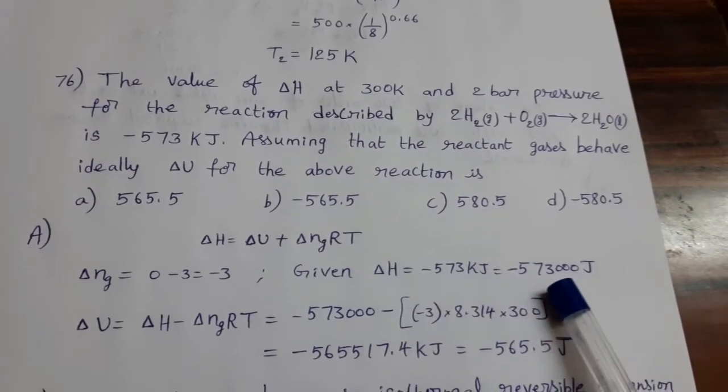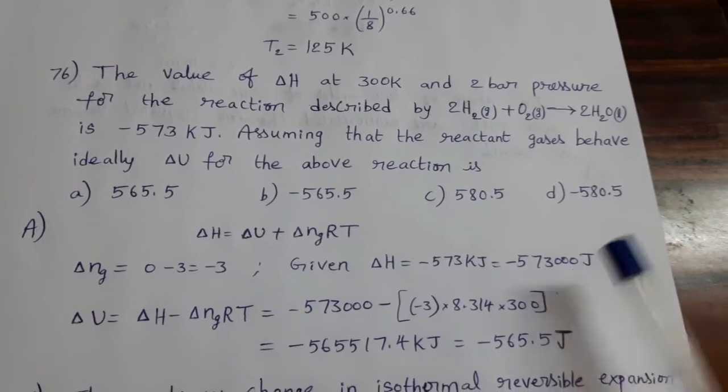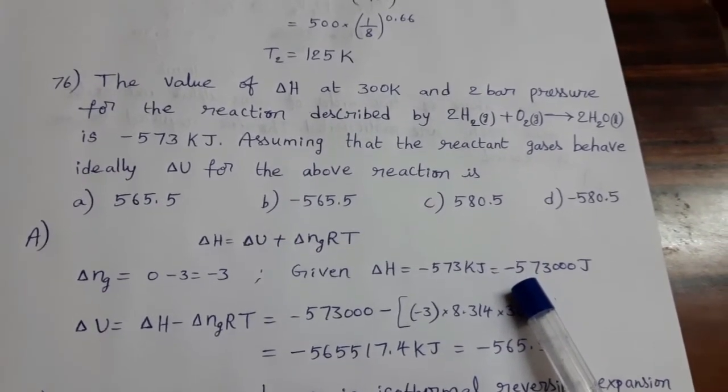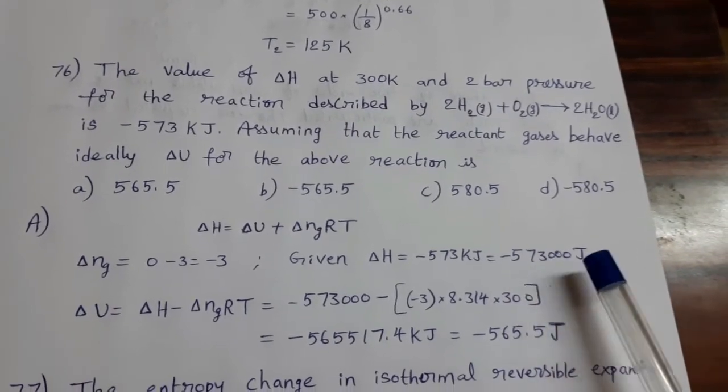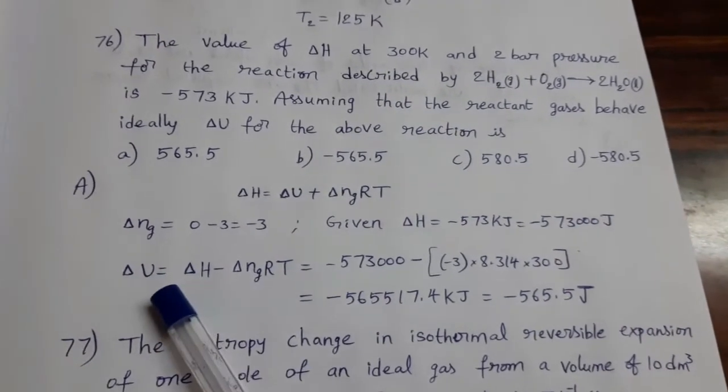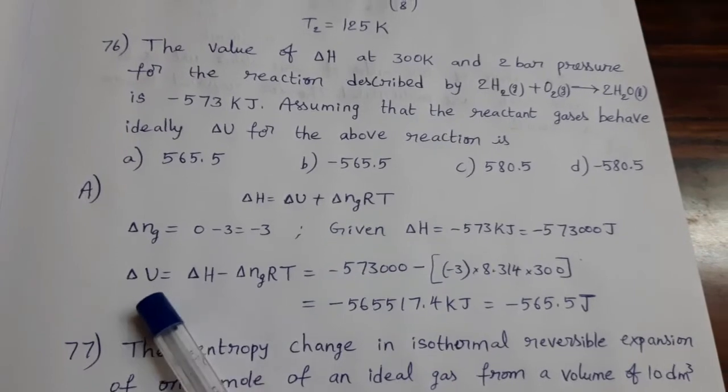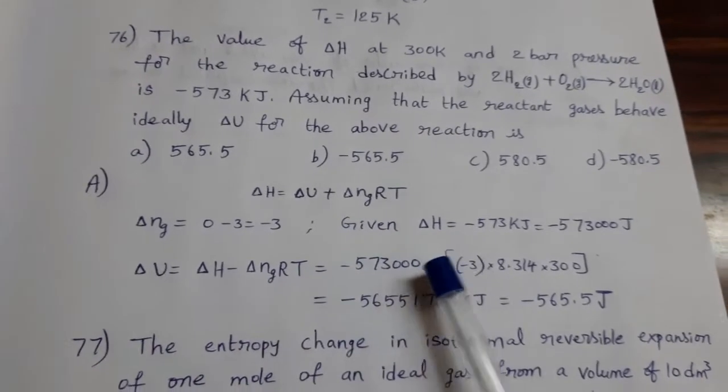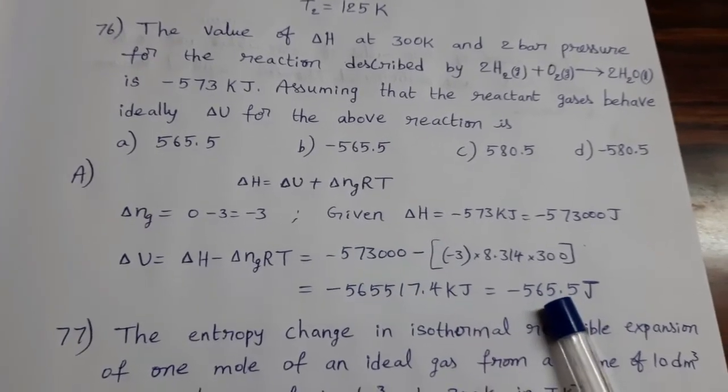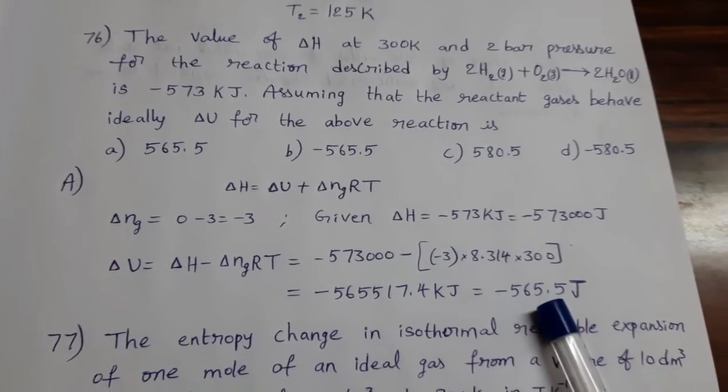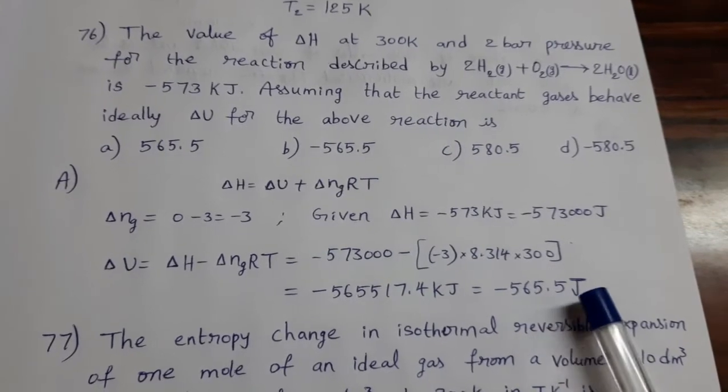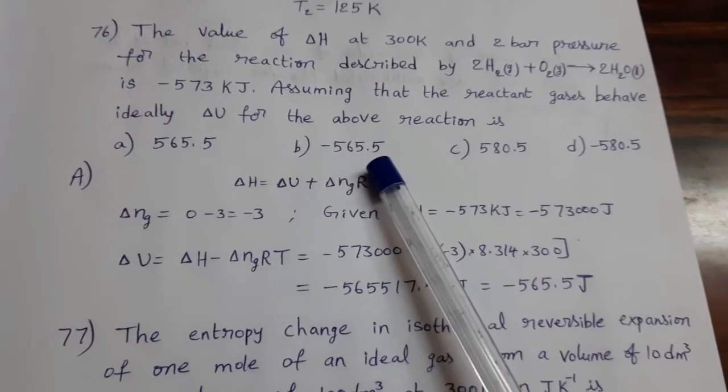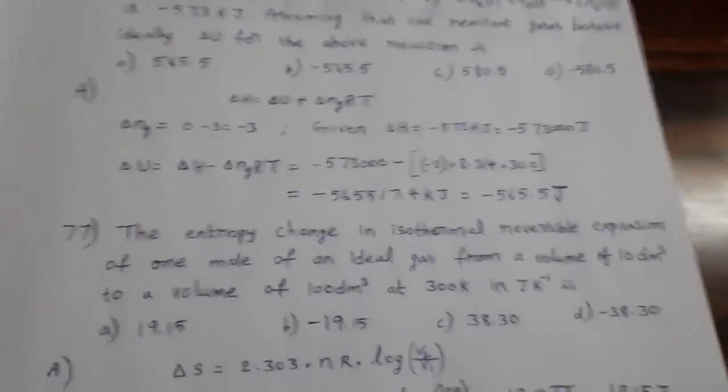Given delta H is minus 573 kilojoules. In terms of joules value is minus 573,000 joules. Now delta U we want to calculate equals delta H minus delta NG·RT. Substitute all the values then delta U we can get minus 565.5 joules. Option B is the answer.